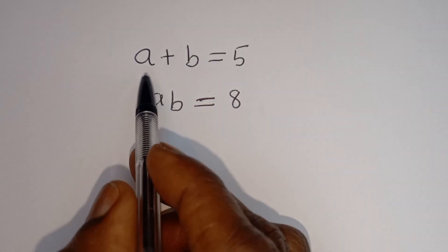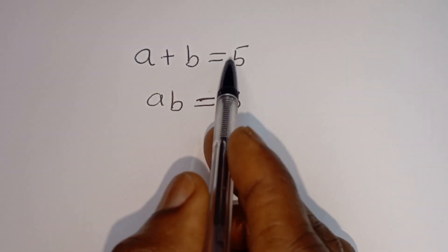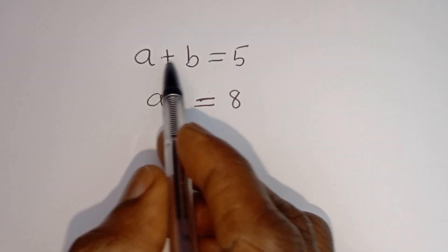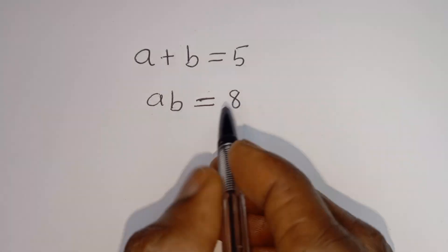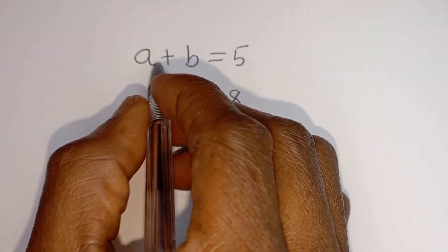Hello. How to solve for A and B in this equation: A plus B is equal to 5, A times B is equal to 8.